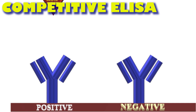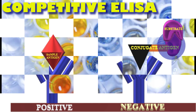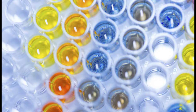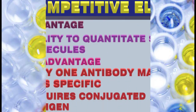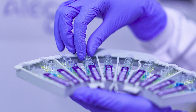Competitive ELISA: a capture antibody is coated on a microplate. The antigen from the sample is allowed to attach to the antibodies. Washing removes excess antigen. Conjugated antigen is then added, which attaches to the unbound capture antibodies, competing with the antigen from the sample. The more antigen present in the sample, the less conjugated antigen will bind to the capture antibody. Washing removes extra proteins, leaving only the capturing antibody–antigen complex and capturing antibody–conjugated antigen complex. Substrate is added, reacting with the enzyme; the signal produced is inversely proportional to the amount of antigen in the sample — more color is produced in negative samples. Advantages: ability to quantitate even small molecules. Disadvantages: less specific as only one antibody is used; requires a conjugated antigen.